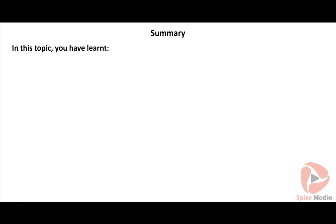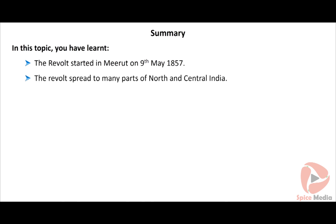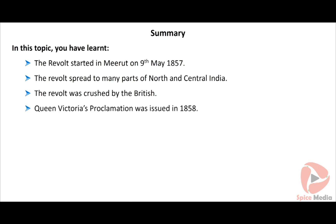In summary: the revolt started in Meerut on 9th May 1857 and spread to many parts of north and central India. The revolt was crushed by the British. Queen Victoria's proclamation was issued in 1858.